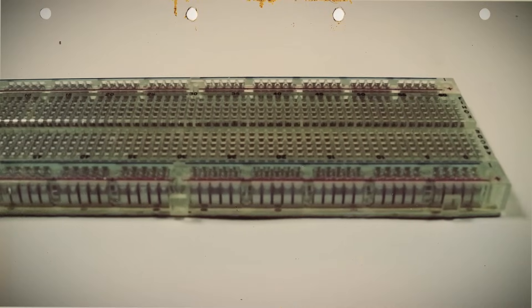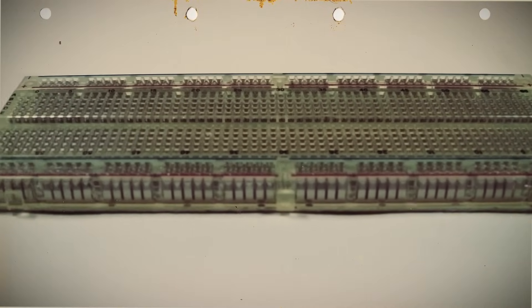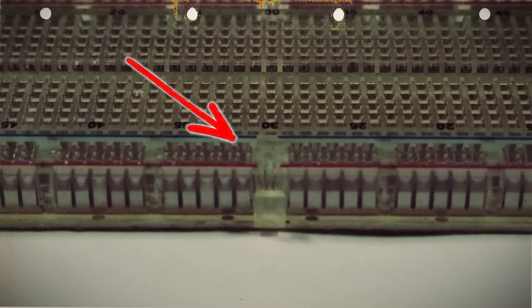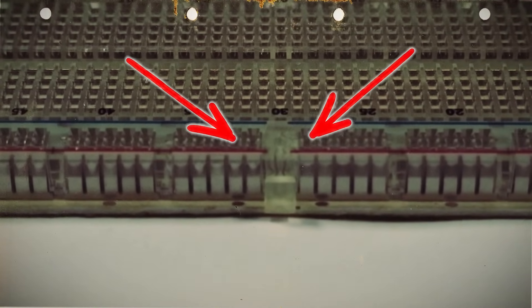Be aware though that some breadboards have a break in the middle of the rows to allow for different types of currents. This means that these rows will not be connected to these rows.